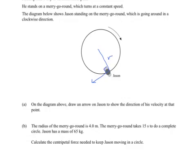Part B: the radius of the merry-go-round is 4.0 meters. The merry-go-round takes 15 seconds to do a complete circle, and Jason has a mass of 65 kilograms. Calculate the centripetal force needed to keep him moving in a circle.